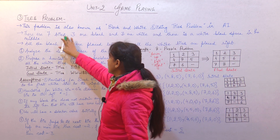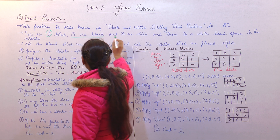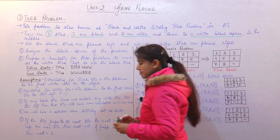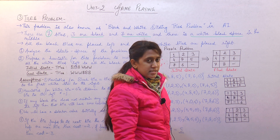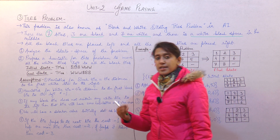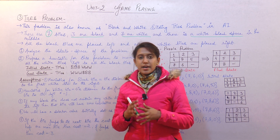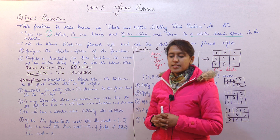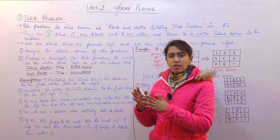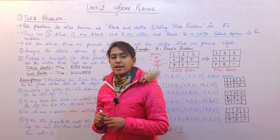We are given 7 tiles: 3 are black and 3 are white, and the one remaining is a white blank space in the middle. We have to arrange the 6 tiles — 3 black and 3 white — in such a way that on the left side there are either all black tiles or all white tiles, and on the right side the other color, using the one blank tile.